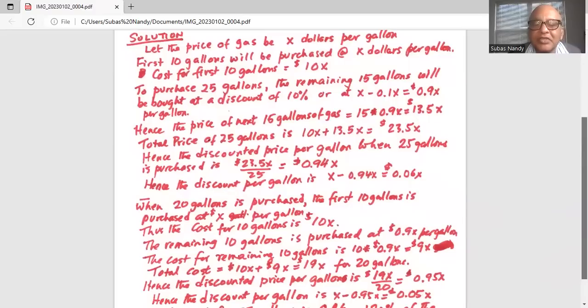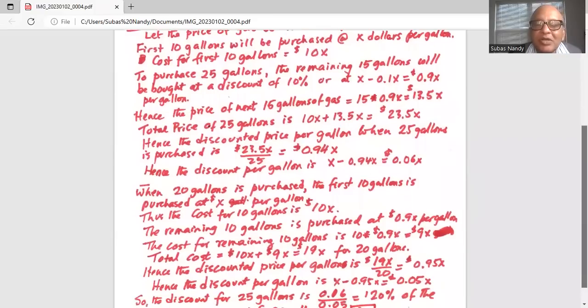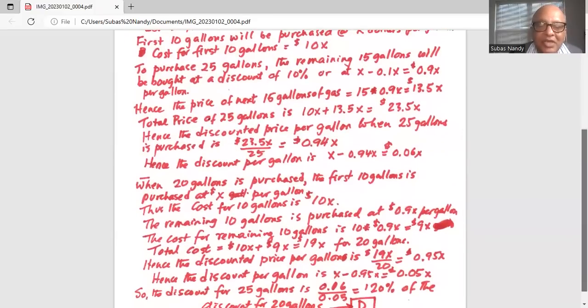The cost for the remaining 10 gallons to make up 20 gallons is 10 times 0.9X, or 9X. So total cost for the first 10 gallons is 10X and for the next 10 gallons is 9X. 10X plus 9X is 19X for 20 gallons. Hence the discounted price per gallon is 19X divided by 20, or 0.95X.